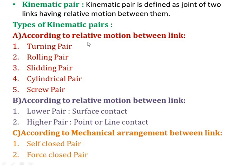If a link has turning motion with respect to another, it is a turning pair. If two links have rolling motion, it is a rolling pair. If there is sliding motion, it forms a sliding pair. The same applies to cylindrical and screw pairs. If two links have surface contact, it is a lower pair — covering turning, rolling, sliding, and cylindrical pairs. If two links meet at a point or line contact, it is a higher pair, such as cams and followers. According to mechanical arrangement, we have self-closed pair and force-closed pair.